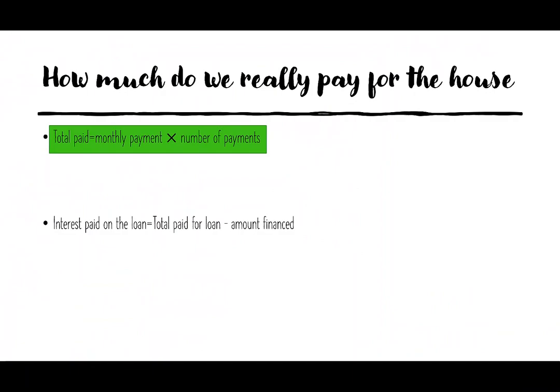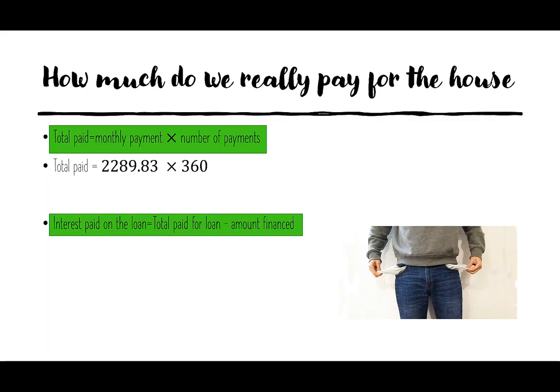Now that we know how much we pay per month, let's talk about how much we really pay for the house. We're going to look at the total paid, which is the monthly payment times the number of payments. So we pay $2,289.83 a month for 360 months, which is a total of $824,338.80.